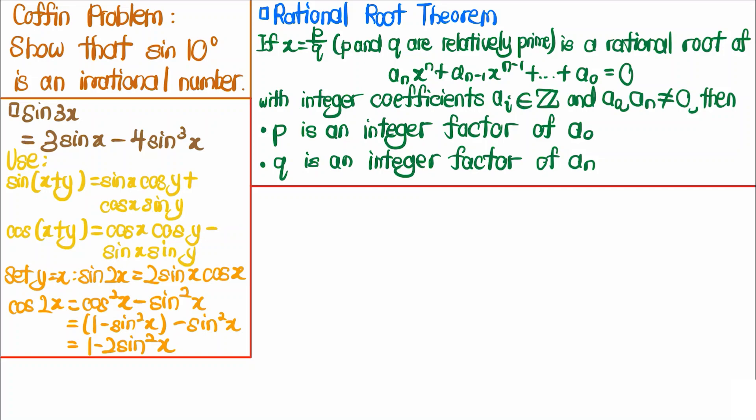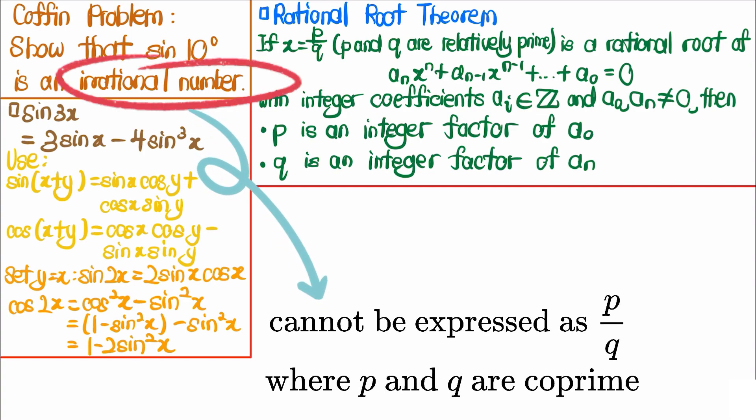Let's solve a coffin problem, which is designed to be hard but with elementary solutions. The problem states that we have to show that the sine of 10 degrees is an irrational number.